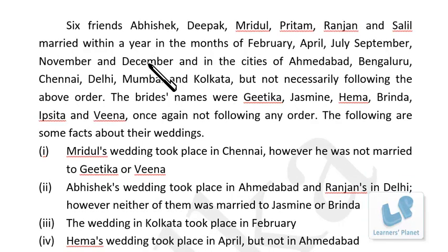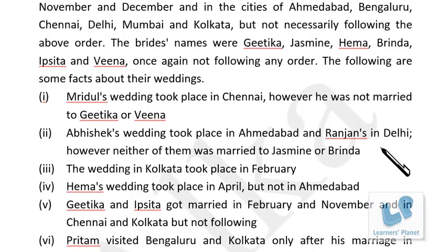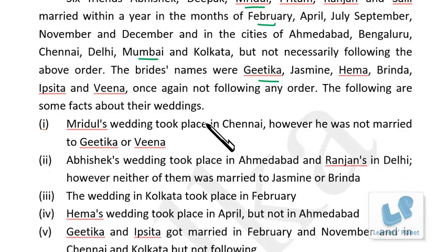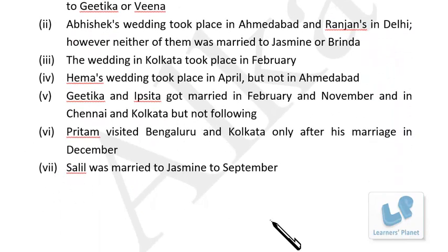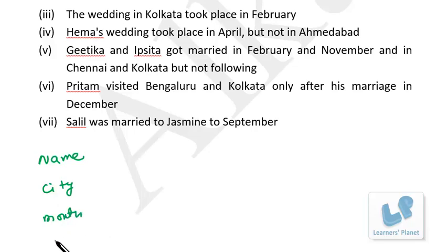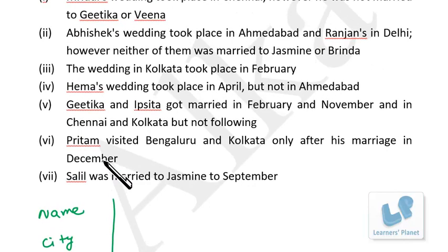Six friends — Abhishek, Deepak, Mridul, Preetam, Ranjan and Salil — married in a year in given months, given cities, and names of the brides are given along with some more facts. This is a puzzle based on arrangement with four variables: name, month, city, and bride. Instead of making a matrix, just write down all the variables in a column — name, city, month, and bride — then fill in information from the facts.